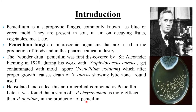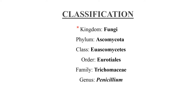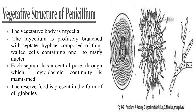Later it was found that the strain Penicillium chrysogenum is more effective than Penicillium notatum in the production of penicillin. Coming to the classification of Penicillium, it belongs to the phylum Ascomycota, family Trichocomaceae.